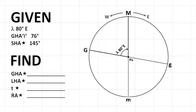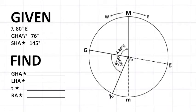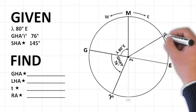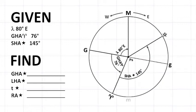The GHA of Aries is 76 degrees. Draw the hour circle of Aries 76 degrees west of G, because GHA is always measured westward. The SHA of the star is 145 degrees. Place the hour circle of the star 145 degrees west of Aries.